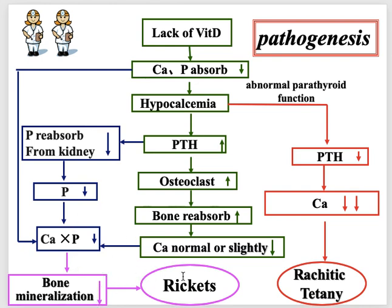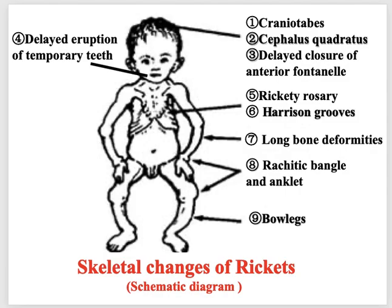Vitamin D deficiency in babies causes bone deformities. Rickets can also present with symptoms of hypocalcemia without bone abnormalities — these include seizures, neuromuscular irritability, tetany, and apnea. The presentation is more common before two years of age when there is high demand of calcium in rapidly growing bone. Rickets signifies a failure in mineralization of the growing bones or osteoid tissue.